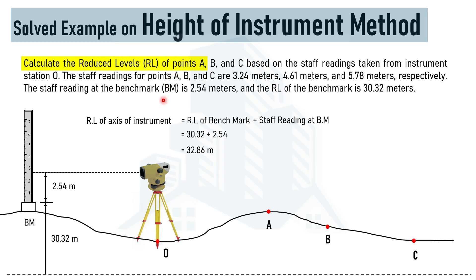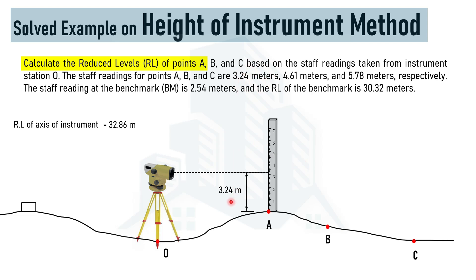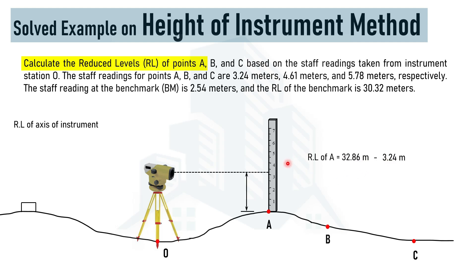To find the reduced level at point A, we place the staff at point A and take the staff reading, which is 3.24 meters. Since we know the reduced level of the axis of the instrument is 32.86 meters and we move downward by 3.24 meters, we subtract: 32.86 − 3.24 = 29.62 meters, which is the reduced level at point A.